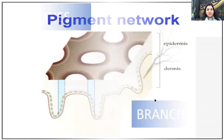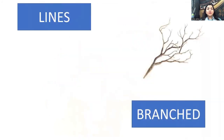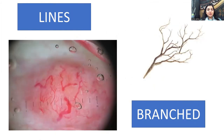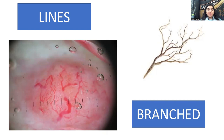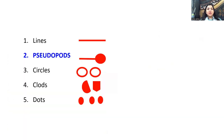The last line configuration is branched — seen in basal cell carcinoma. You can see thin and thick lines, which are blood vessels, forming branched lines. Pigmented branched lines also exist, but the example here is BCC with branched lines formed by blood vessels.